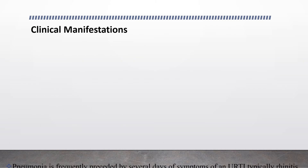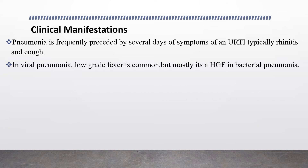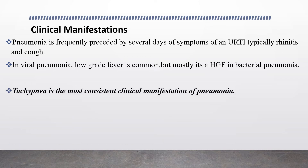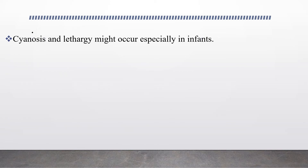Regarding clinical manifestations, pneumonia is frequently preceded by several days of symptoms of upper respiratory tract infection such as rhinitis and cough. In viral pneumonia, low-grade fever is common, but mostly it is high-grade fever in bacterial pneumonia. Tachypnea is the most consistent clinical manifestation of pneumonia. Increased work of breathing accompanied by intercostal, subcostal, and suprasternal retractions, nasal flaring, and the use of accessory muscles is common. Cyanosis and lethargy might occur especially in infants in severe pneumonia.